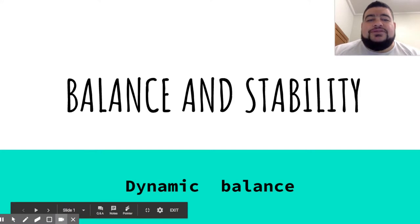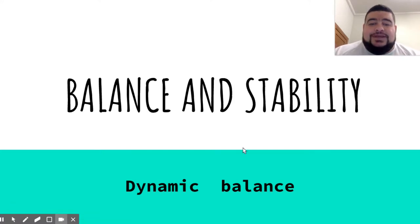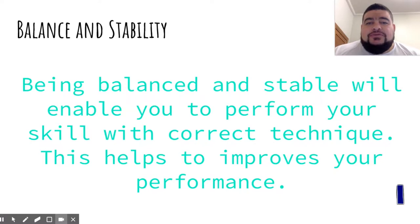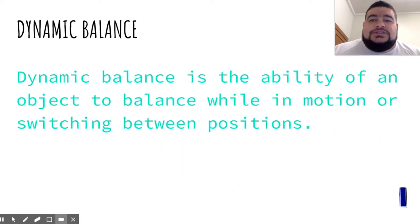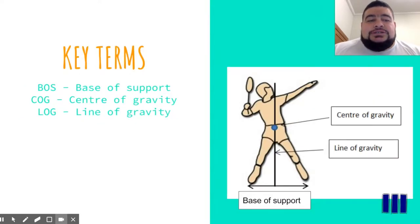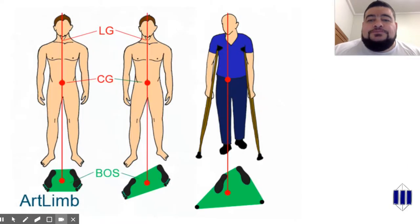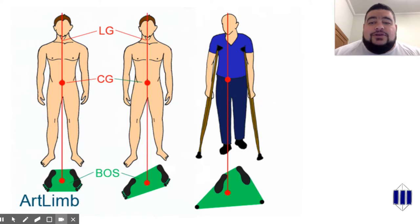Just going to talk to you about balance and stability, and in particular dynamic balance. Being balanced and stable will enable you to perform your skill with correct technique, which helps you to improve your performance. Dynamic balance is the ability of an object to balance while in motion or switching between positions. The dynamic balance is about being balanced through movement, and it's also about promoting and creating force or being more stable while other things are happening to you.